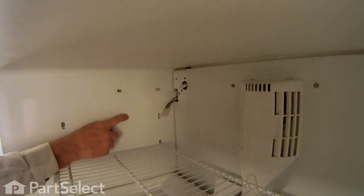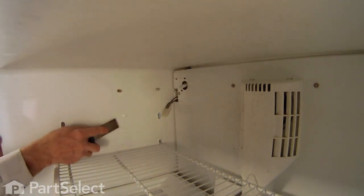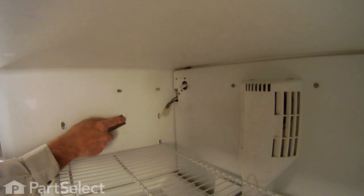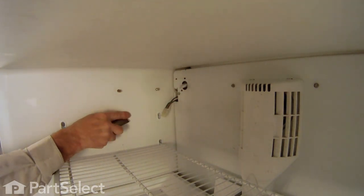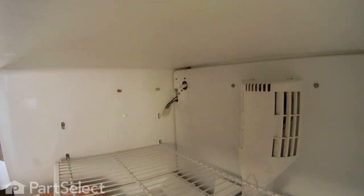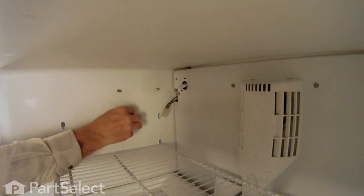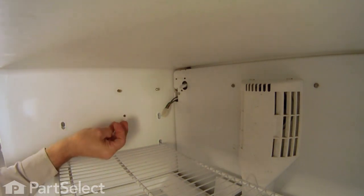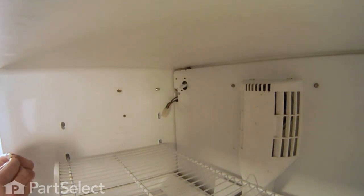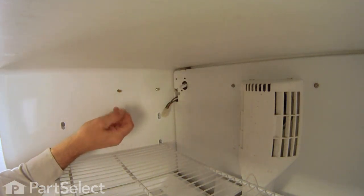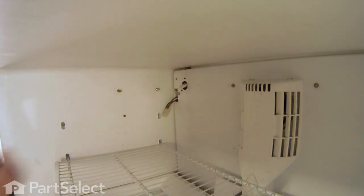Now next we'll take our putty knife and we're going to remove a little plastic cover for the mounting screw on the side that's used to level the ice maker once we have it installed. Just take your putty knife and put it underneath the edge of that plug so you can get it out far enough to grasp it with your fingers, then pull it completely out of the liner and discard it.